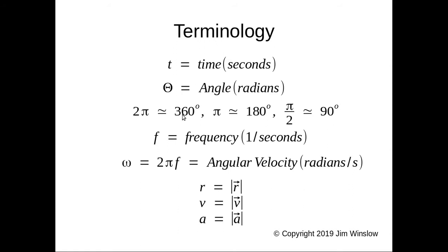Before we go further, here's some terminology. t is time, theta is an angle in radians. For example, 2π radians is equivalent to 360 degrees, π radians is equivalent to 180 degrees, etc. Frequency is in units of 1 over per seconds.